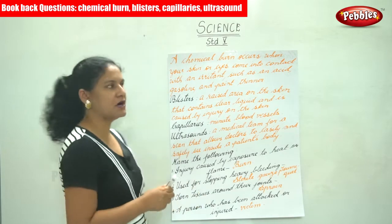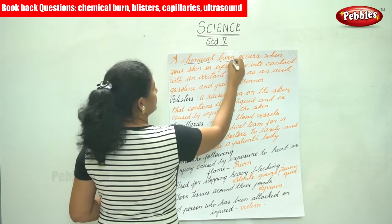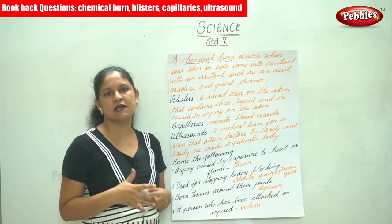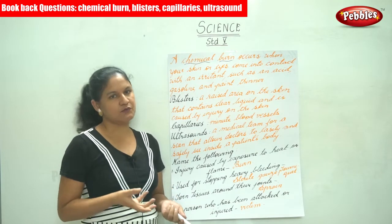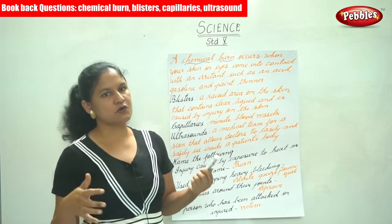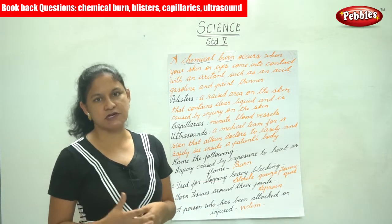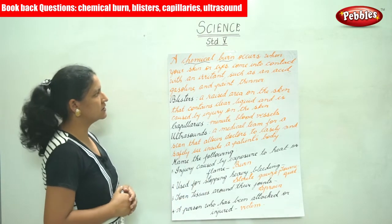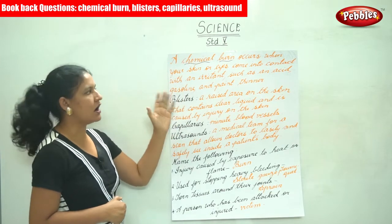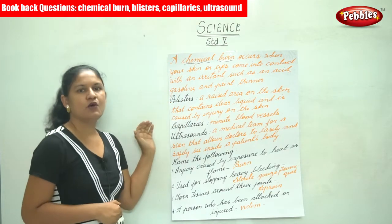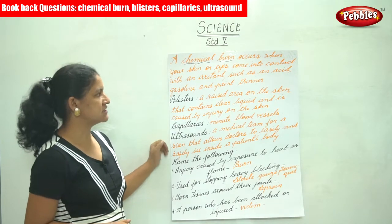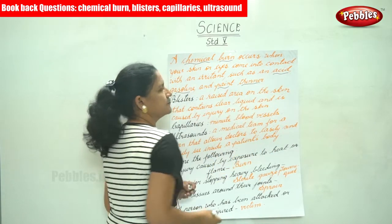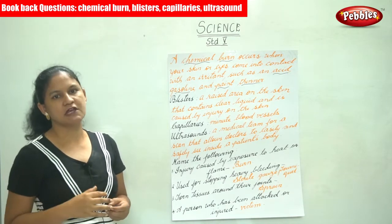Next we are going to talk about chemical burns. Normally burns occur while lighting a matchstick or a candle, or when carrying hot vessels. But a chemical burn occurs when your skin or eyes come into contact with an irritant such as an acid, gasoline, or paint thinner.